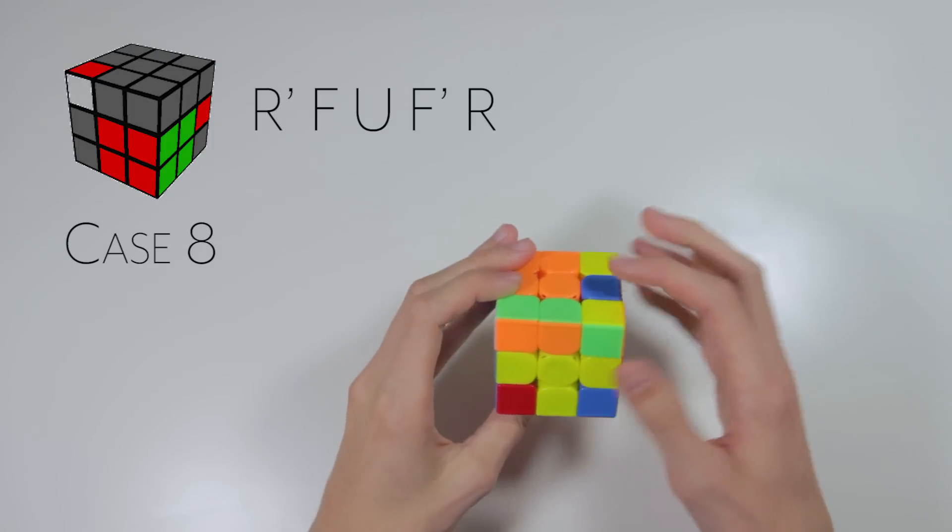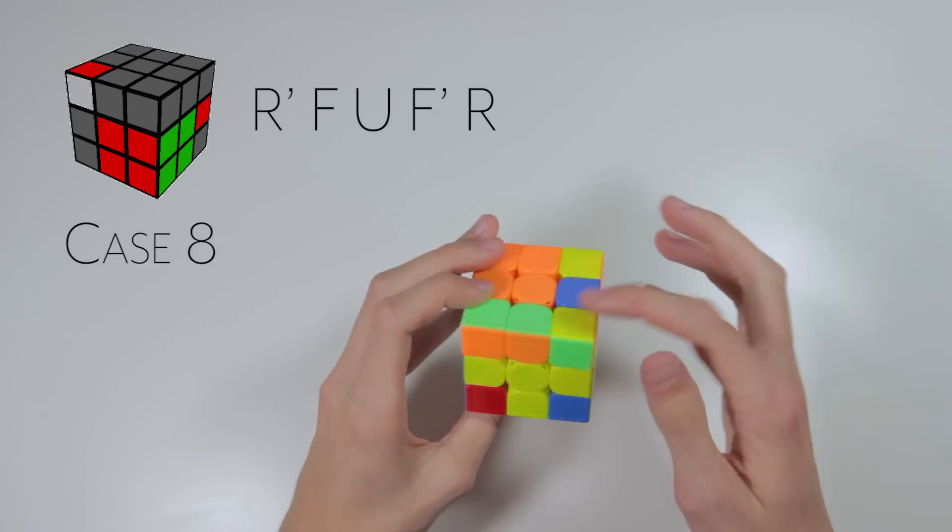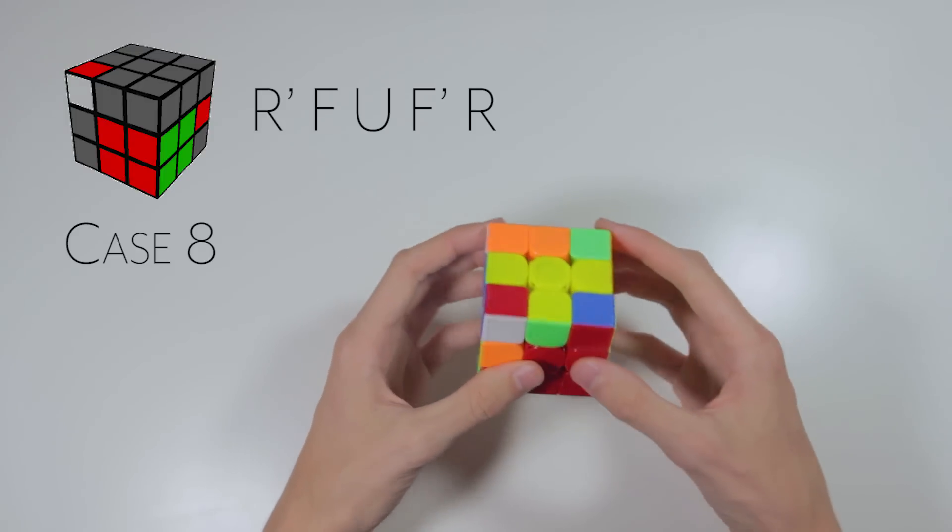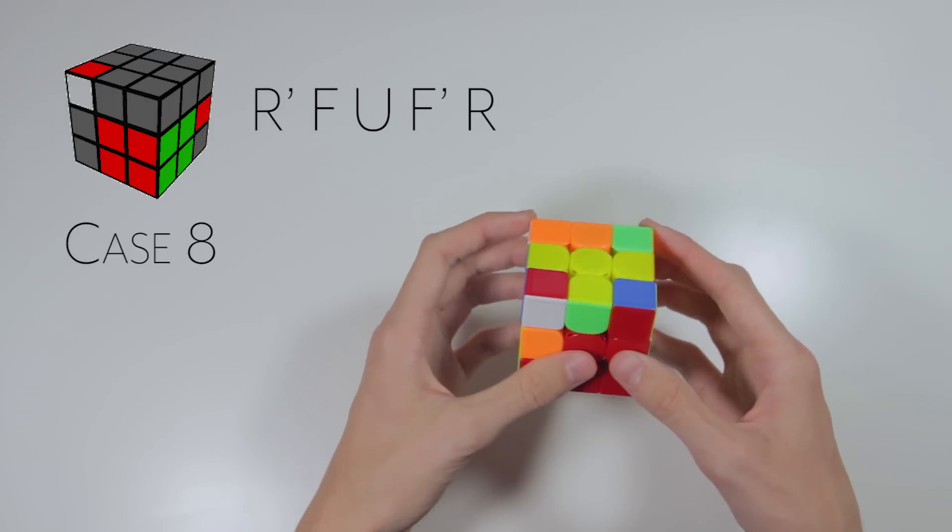Now if you happen to have this pair solved here, it works out really nicely. Otherwise, it's just a good algorithm on its own. Here's what that looks like at a faster speed.